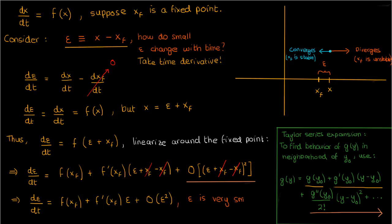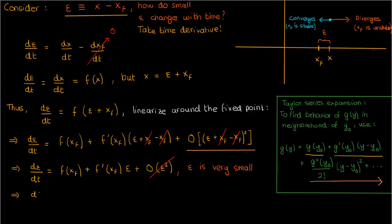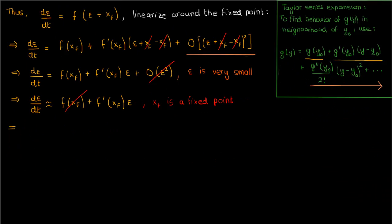Since epsilon is supposed to be a very small perturbation, the higher power terms involving epsilon can be safely ignored, and we end up with a linear approximation of the rate of change of epsilon. Now since x_f is a fixed point, f(x_f) equals 0, which means the expression for the rate of change of epsilon becomes f'(x_f)·epsilon. We can easily solve this differential equation in epsilon, and after solving it, we get epsilon(t) = epsilon_0 × exp(f'(x_f) × t).